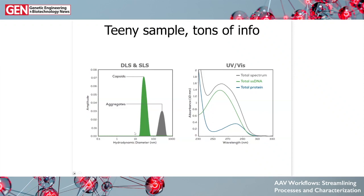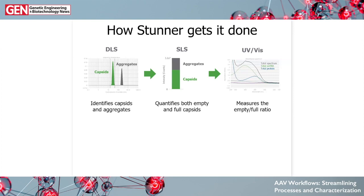Checking out your AAV with DLS tells you what shape your sample is in — if there are only capsids or if aggregates have started to show up. DLS lets you figure out how much SLS intensity is coming just from your AAV capsids, shown as the area under the curve in green. On the UV-Vis side, Stunner's software can break total absorbance down into the amount coming from DNA and the amount coming from protein, calculate how much DNA and protein is present, and use that to calculate percent full.